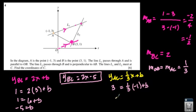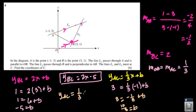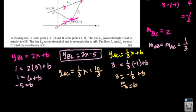So I end up with 3 equals negative 1 third plus B. So I end up with 3 and 1 third, or 10 thirds, equals B. So the equation of AC is 1 third X plus 10 thirds. I'm going to leave it just like that.